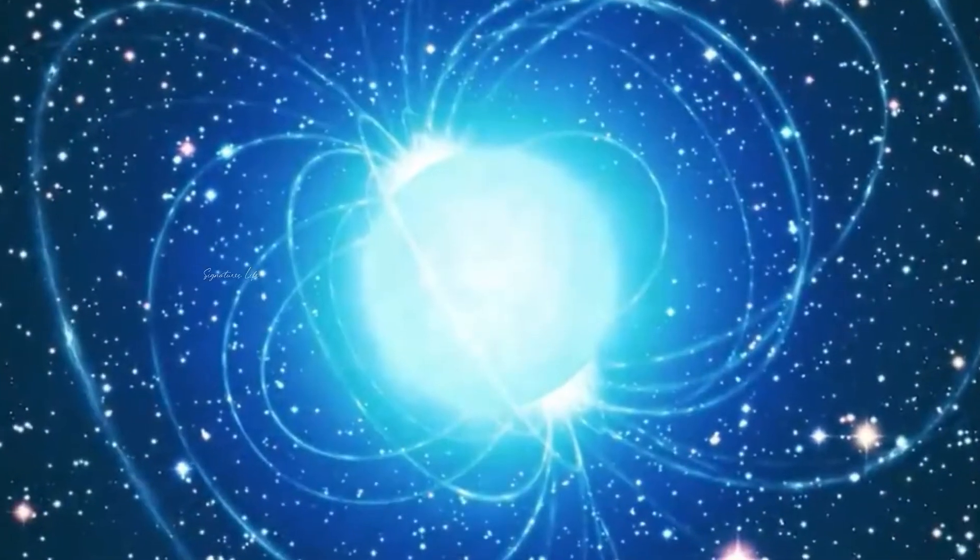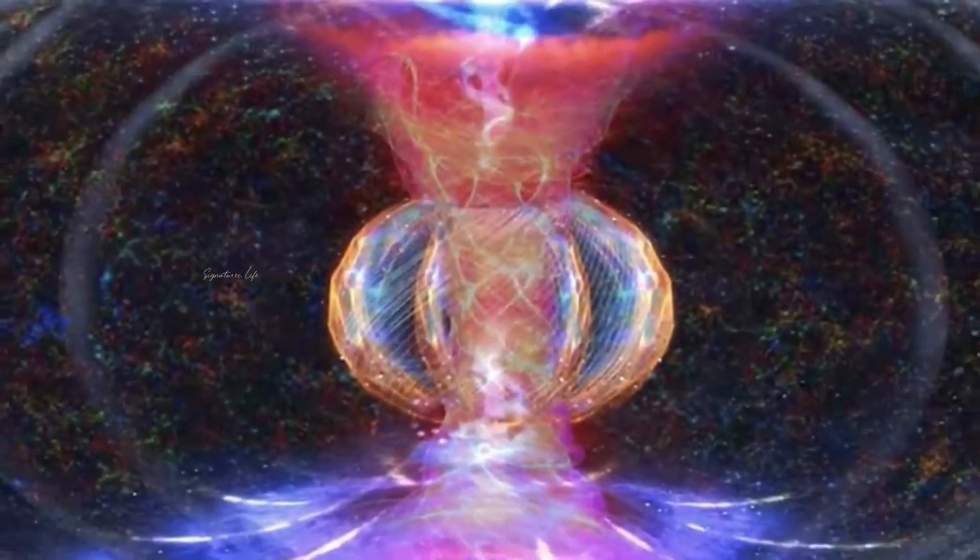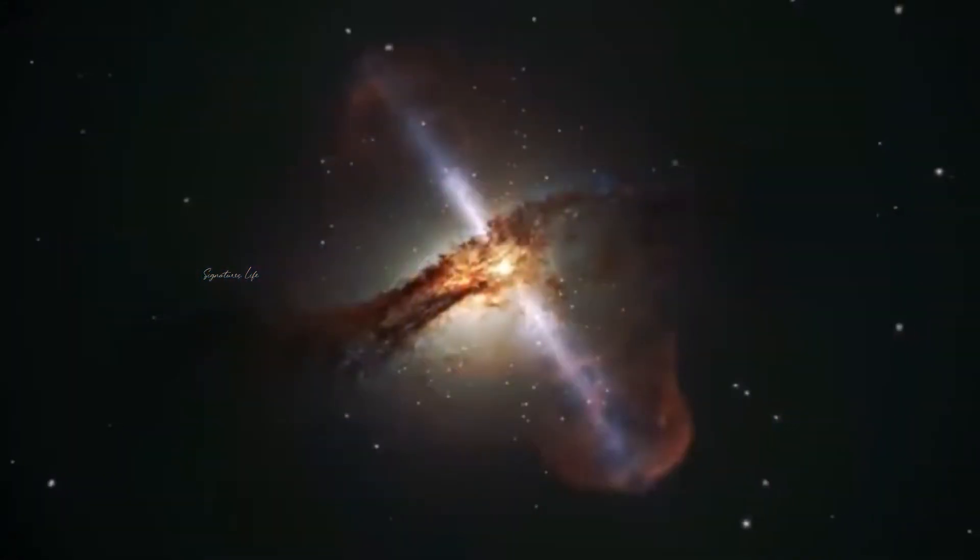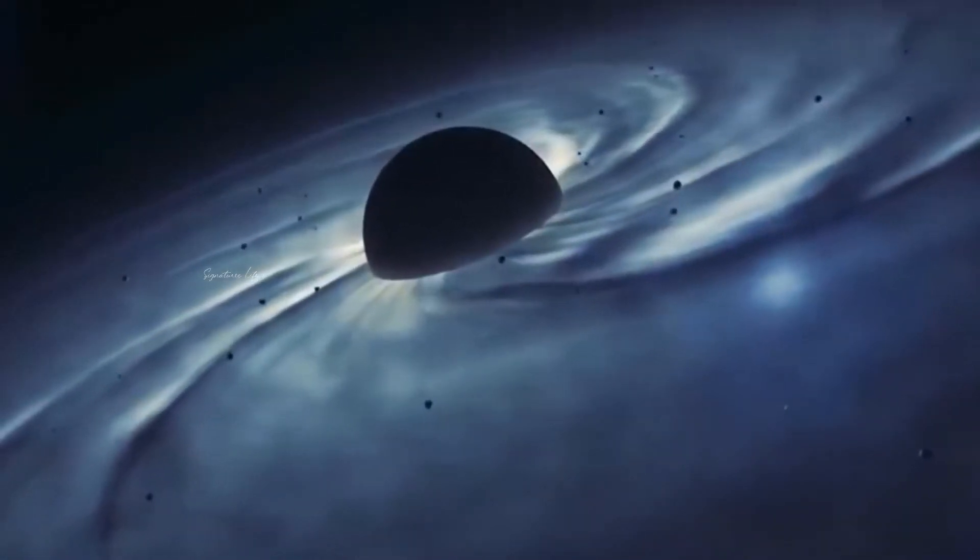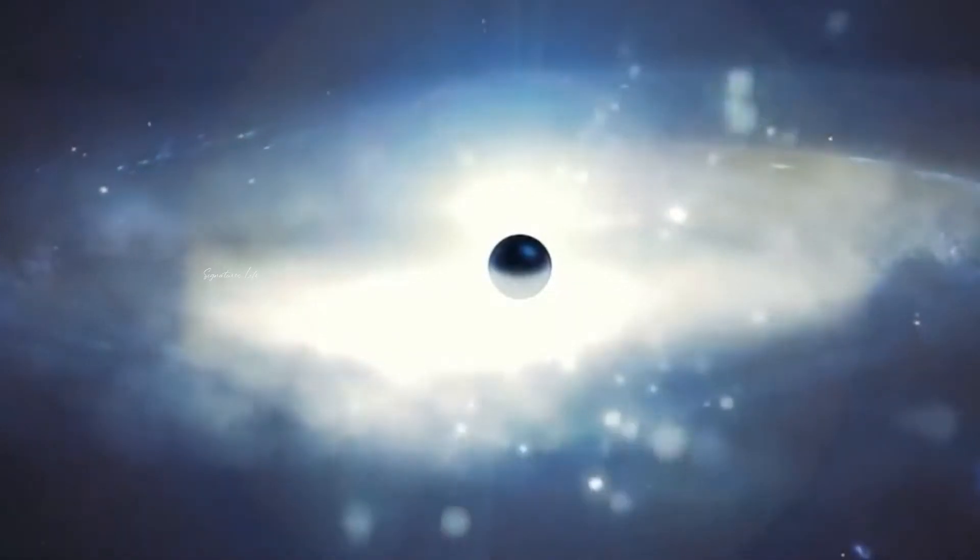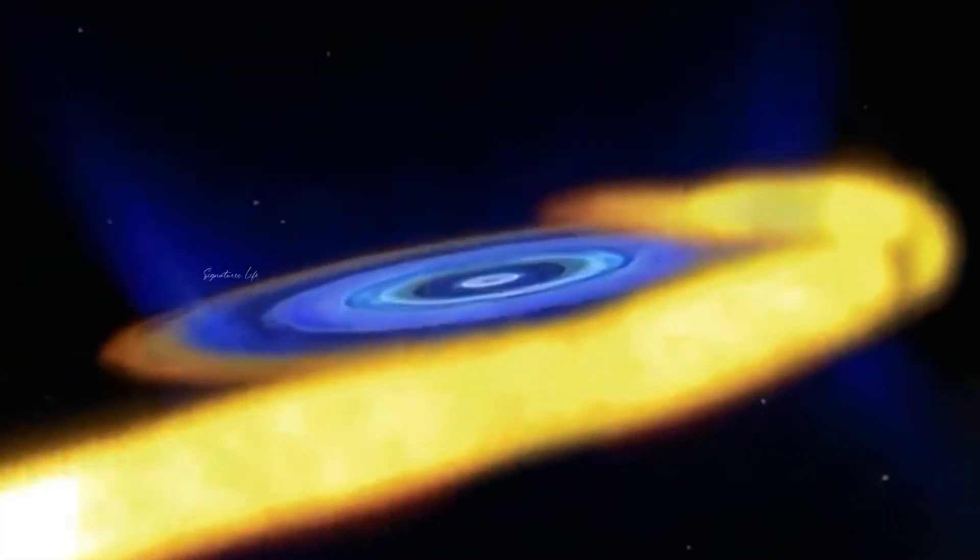The event horizon isn't a real physical boundary. It's not a membrane or a surface. It's simply defined as a particular distance from the singularity, the distance where if you fall below this threshold, you can't get out. This is the distance from the singularity where the gravitational pull is so extreme that nothing, not even light itself, can escape the black hole's clutches.